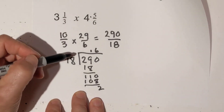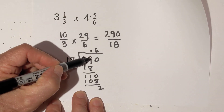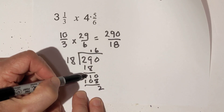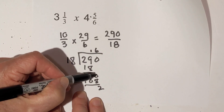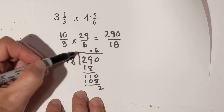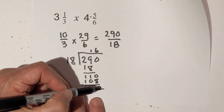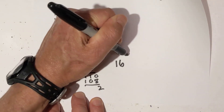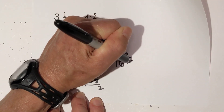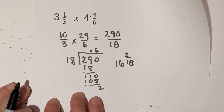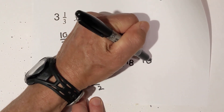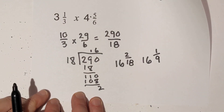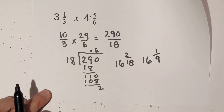Eighteen goes into twenty-nine one time; one times eighteen is eighteen. Twenty-nine minus eighteen is eleven — bring down the zero. It's a hundred and ten; six times eighteen is a hundred and eight, with a remainder of two. So it's sixteen and two eighteenths, which reduces to sixteen and one ninth.